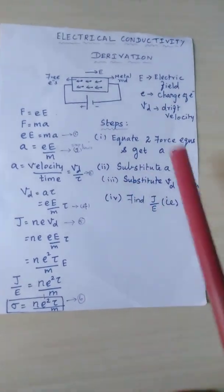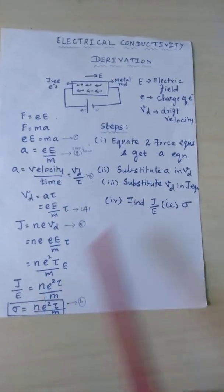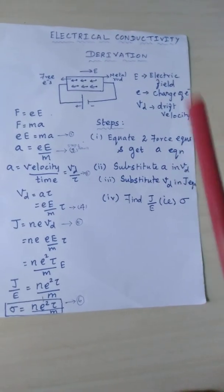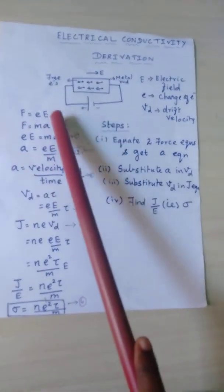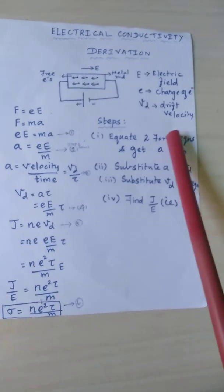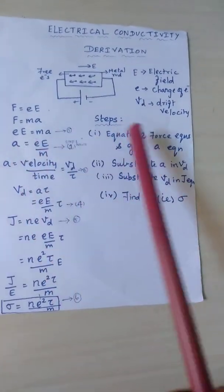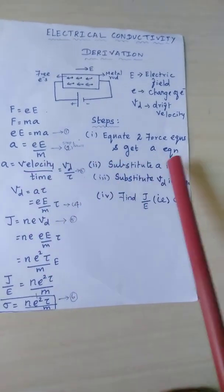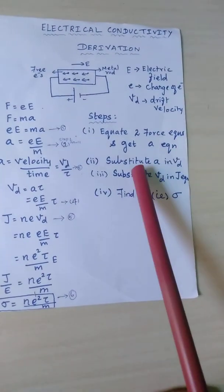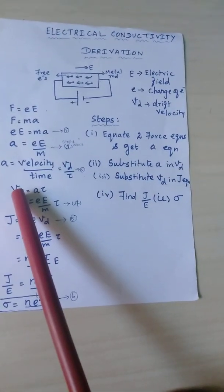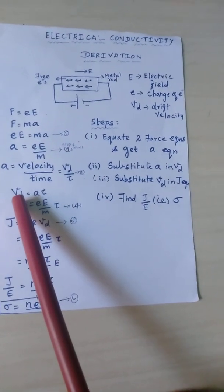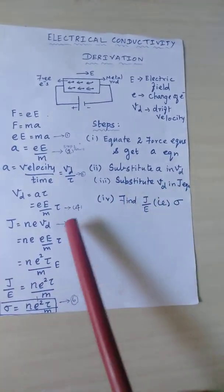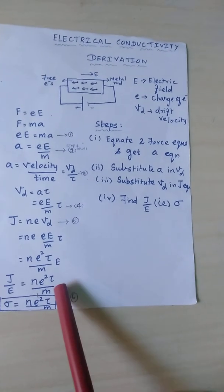In summary, to find σ: First, equate the two force equations F = eE and F = ma to get the acceleration. Second, substitute a into the Vd equation. Finally, substitute Vd into the J equation to get the final result for σ.